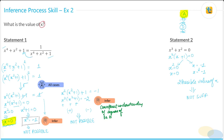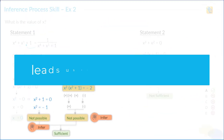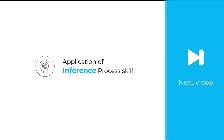The correct answer is choice A. Observe how we took an algebra question and applied the inference process skill by utilizing our conceptual understanding. That concept is straightforward, but you need to retrieve it and apply it at the right time. By applying these process skills, you've been able to solve a difficult 700-level question correctly. Watch the next video to see the application of inference skill on a geometry question.